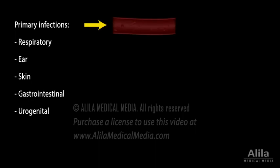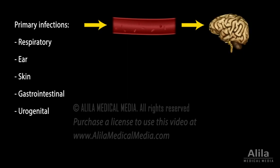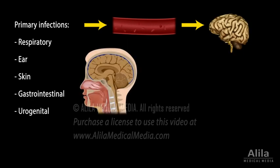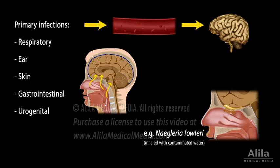It may invade the bloodstream, then disrupt the blood-brain barrier to gain access to the brain, or it may spread directly by way of the nose, throat, or ear following a respiratory or ear infection. Some organisms can reach the brain by traveling along olfactory or peripheral nerves.